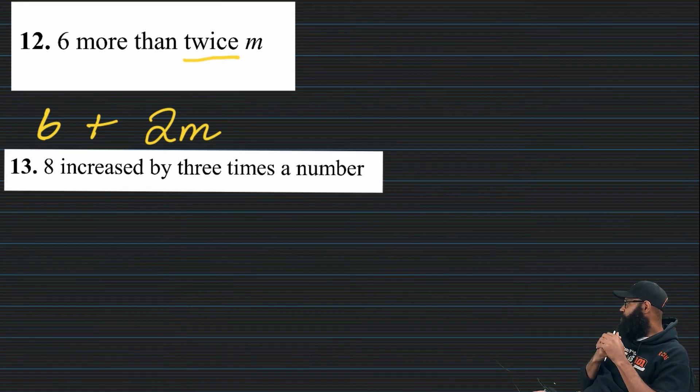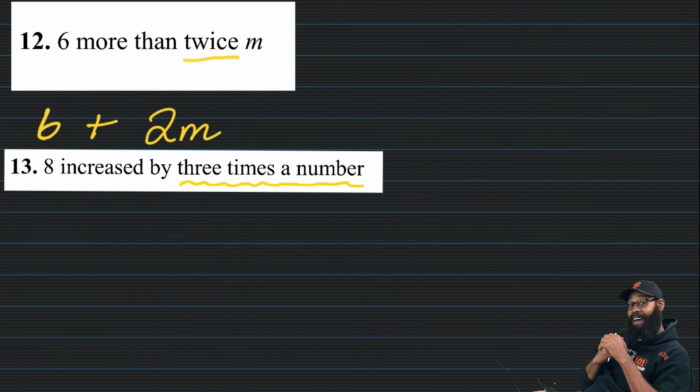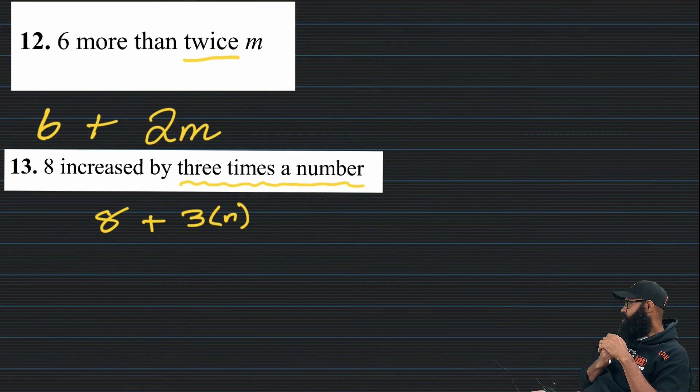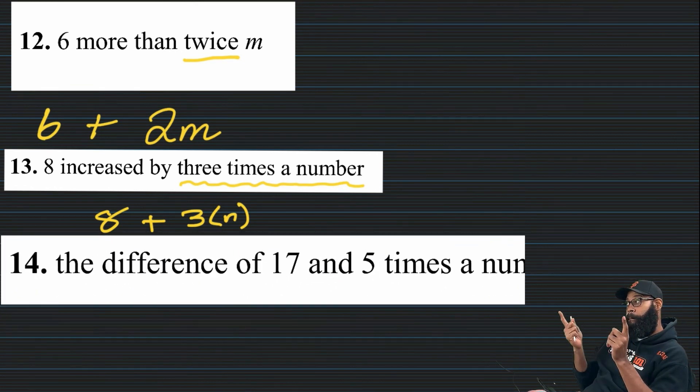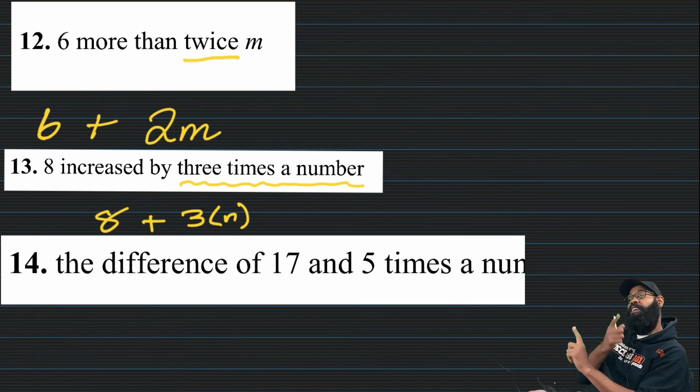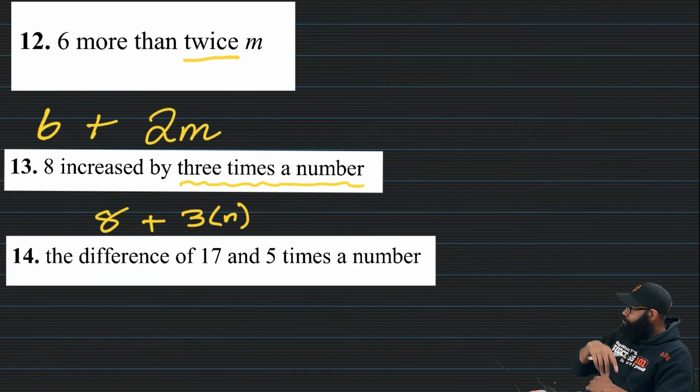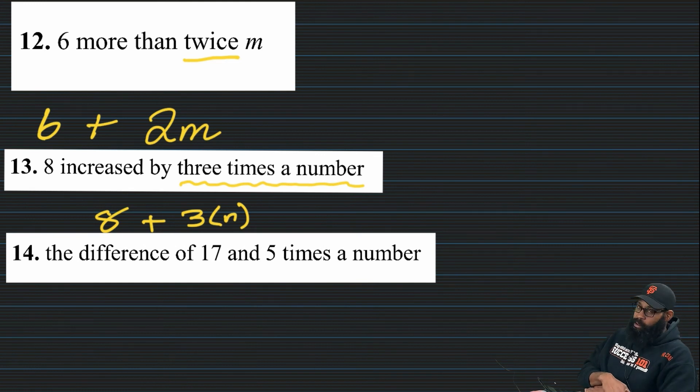Thirteen. Eight increased by three times a number. So again, your choice with three times. If you had to put the dot for times or you wanted to put the parentheses for multiplication times. Again, increase means addition. And my eight go in front on the commutative property of addition means I can swap those, but eight plus three N. Let's get this handout done.